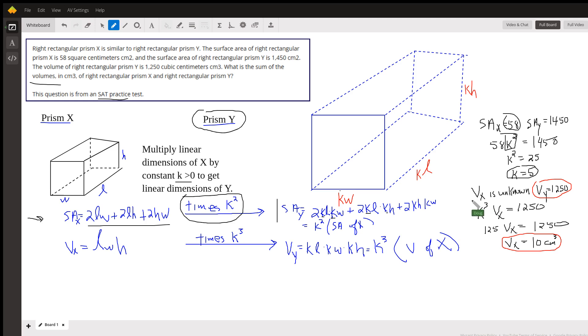And now for volume, the volume of prism X is unknown, but the volume of prism Y is 1250. To get from here to here, we had to multiply the volume of X by K cubed because we're dealing in volume. But we know K is 5. So K cubed is 125. That's why we went to all this trouble up here. And if 125 V sub X equals 1250, V sub X is 10.